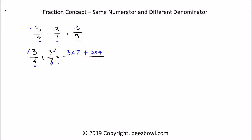And for the denominator place, we will multiply both fractions' denominators, that is 4 multiplied by 7. So, 3 multiplied by 7 is 21, plus 3 multiplied by 4 is 12, upon 4 multiplied by 7 is 28. The result of this addition is 21 plus 12, that is 33 upon 28.